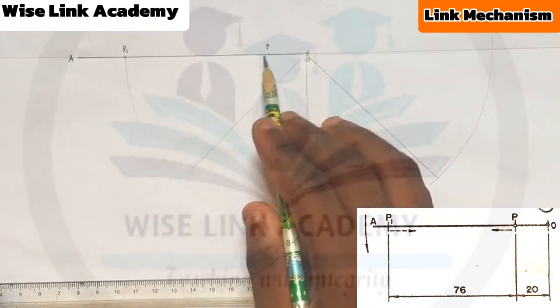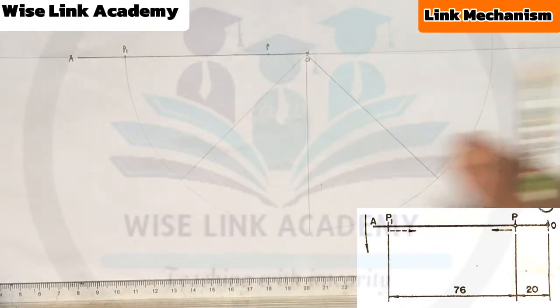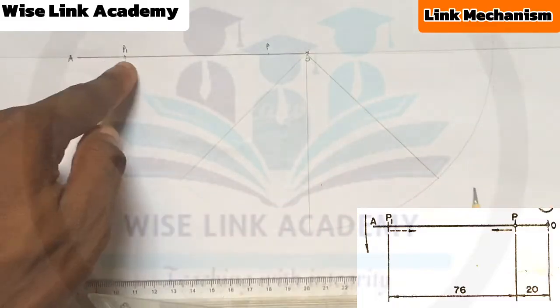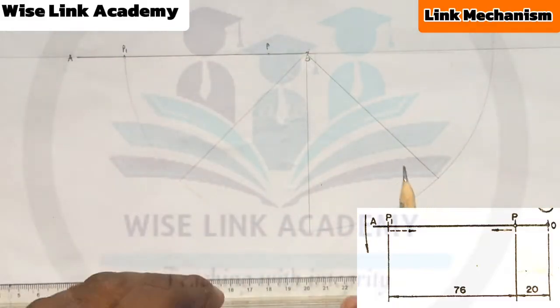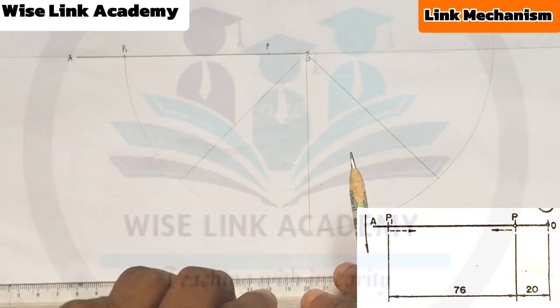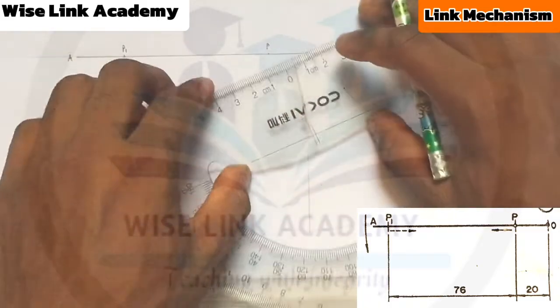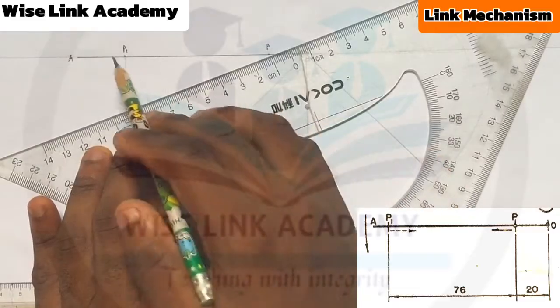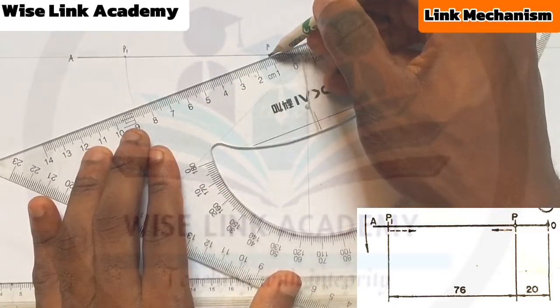Now to divide point P1 and P into 8 equal parts, my task now is that I want to divide P1 and P into 8 equal parts using the concept of line division method, which I will drop the link in the description of this video.